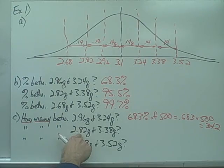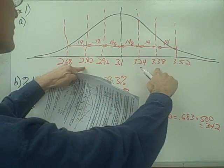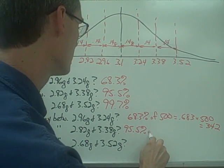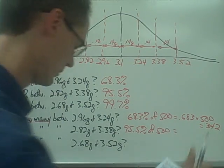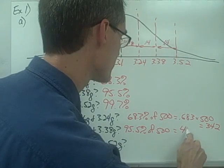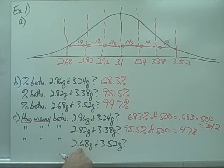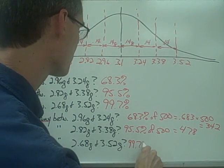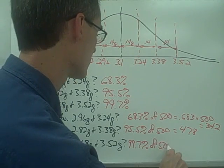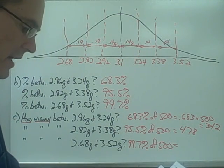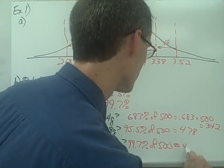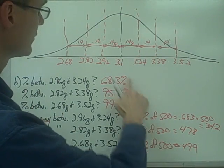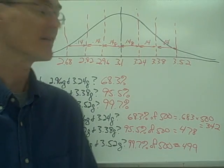How many pennies lie between 2.82 and 3.38 grams? That's within two standard deviations, so 95.5% of 500 pennies, which is approximately 478 pennies. How many lie between 2.68 and 3.52 grams? That's 99.7% of 500, which is approximately 499 pennies. So within three standard deviations of the mean, I have almost all of my 500 pennies.